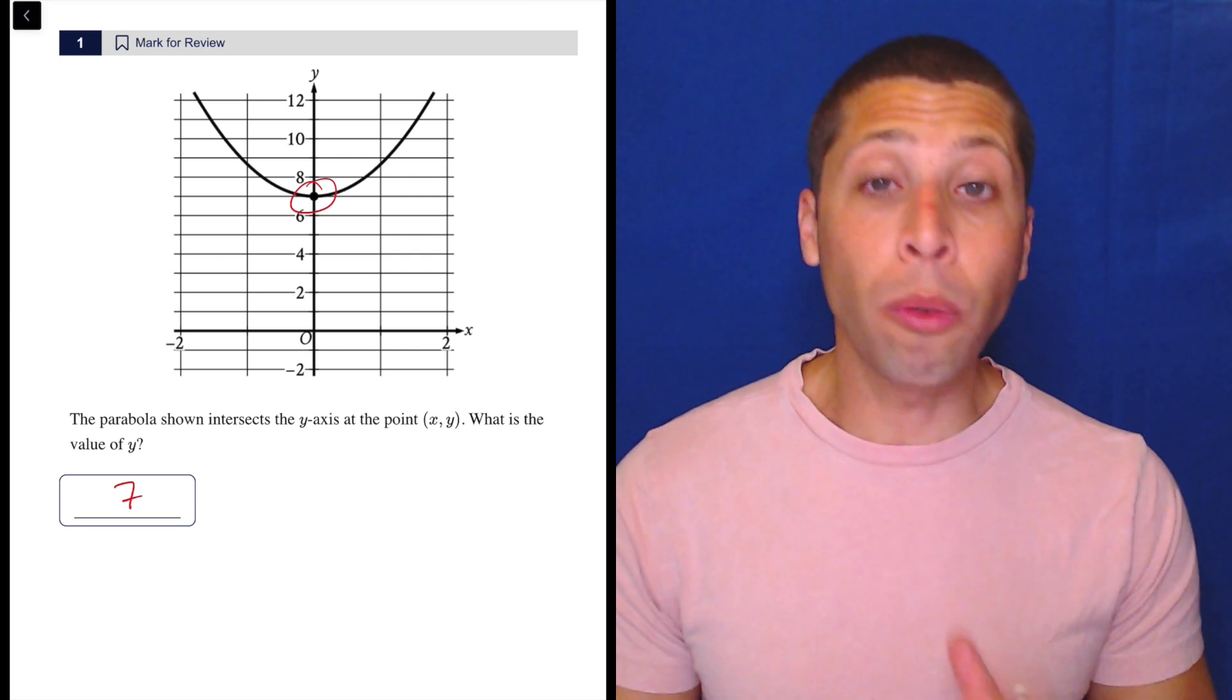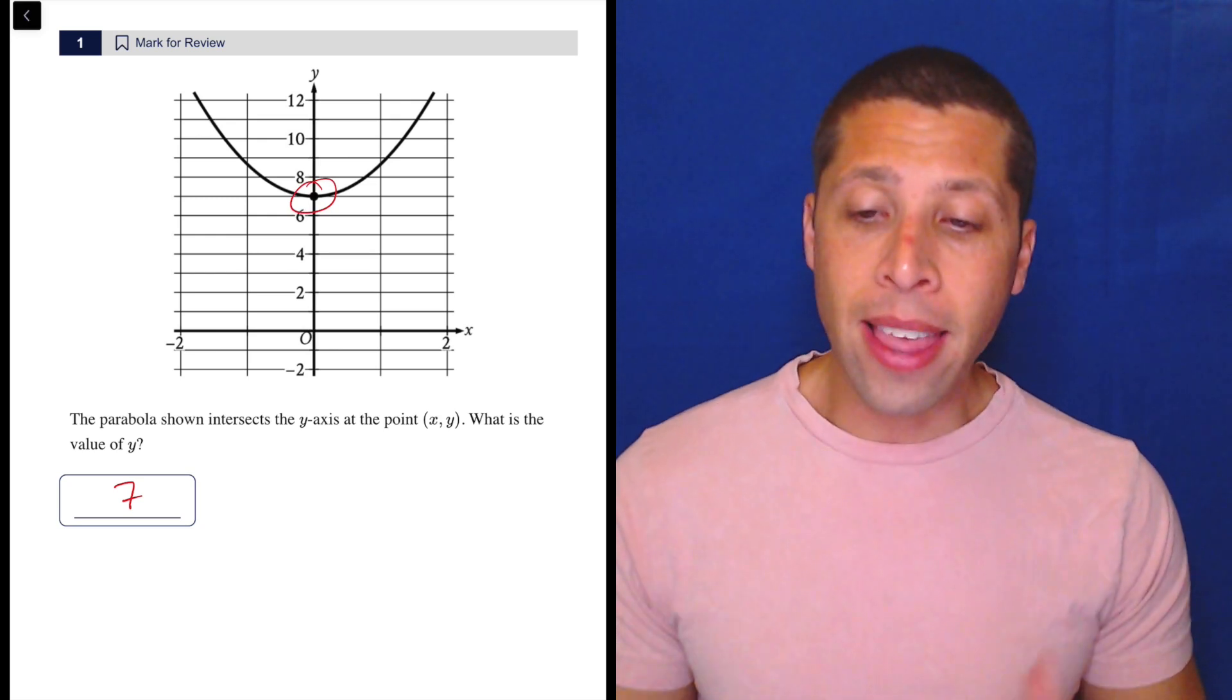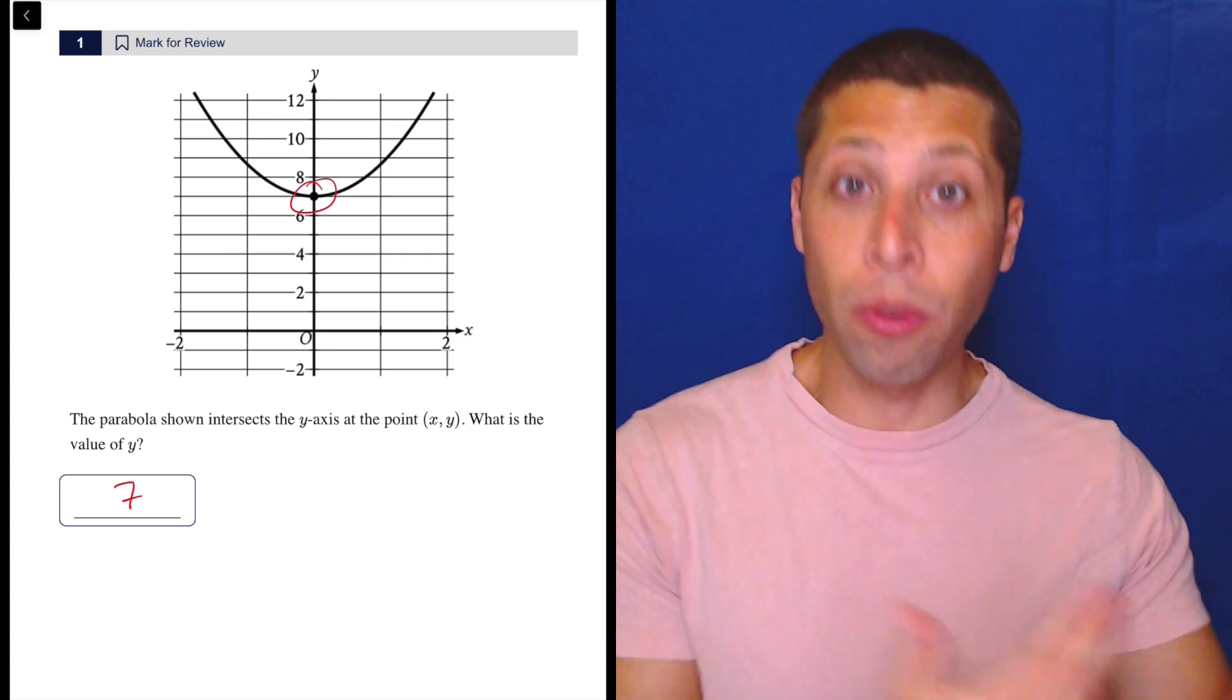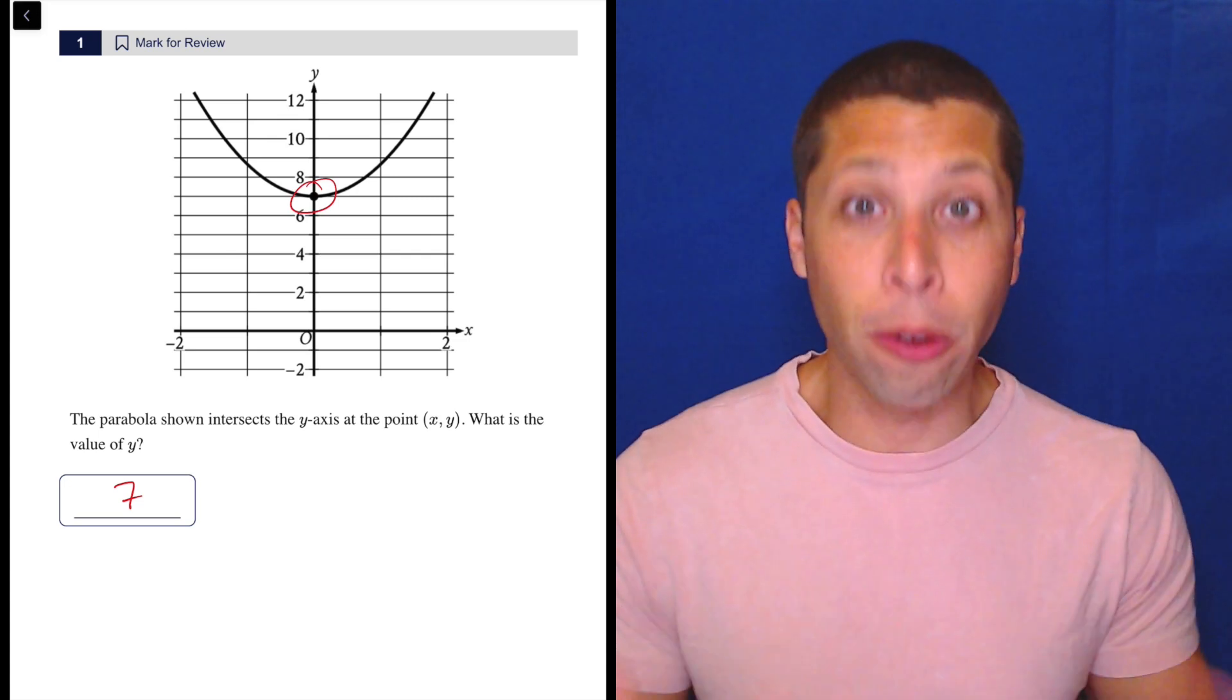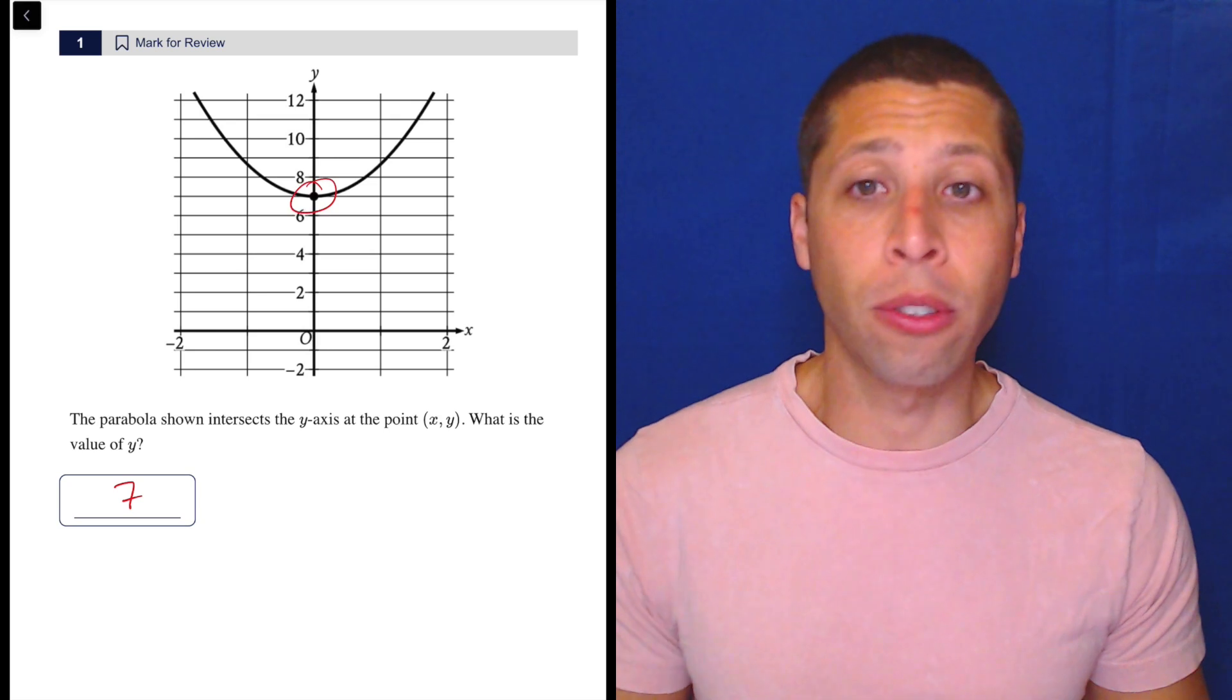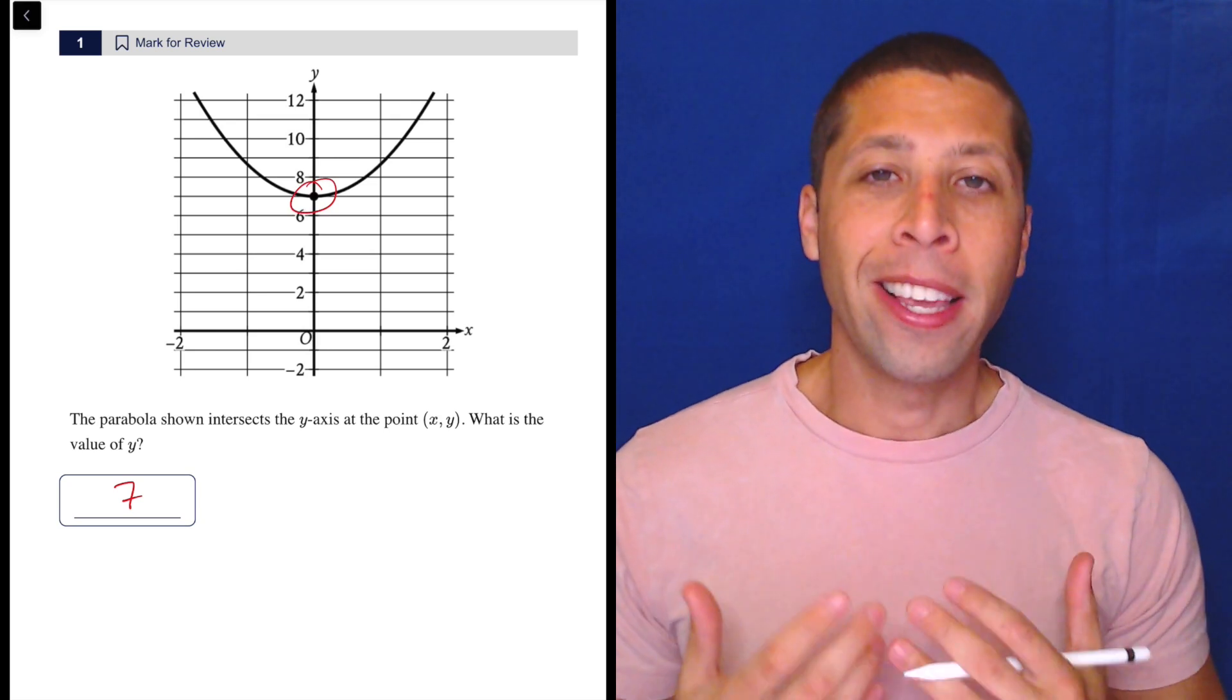Some people think because they struggle with pacing on the math section, specifically the hard module, they think that it's in their interest to start the math module by going to the end where the harder questions are. Those are the ones they tend to run out of time on. So they think, oh, if I go to the end and I do those first, then I won't run out of time on them because I'll have all the time in the world to do them.